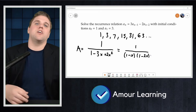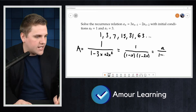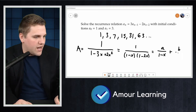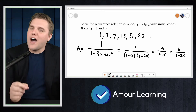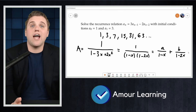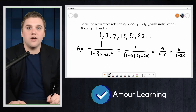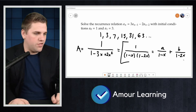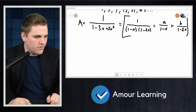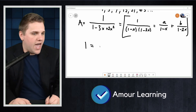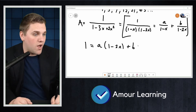We decompose the fraction as A over (1 − x) plus B over (1 − 2x), for some constants A and B. To find A and B, we add the two decomposed fractions using a common denominator. Multiplying everything by that denominator gives us: 1 = A·(1 − 2x) + B·(1 − x).